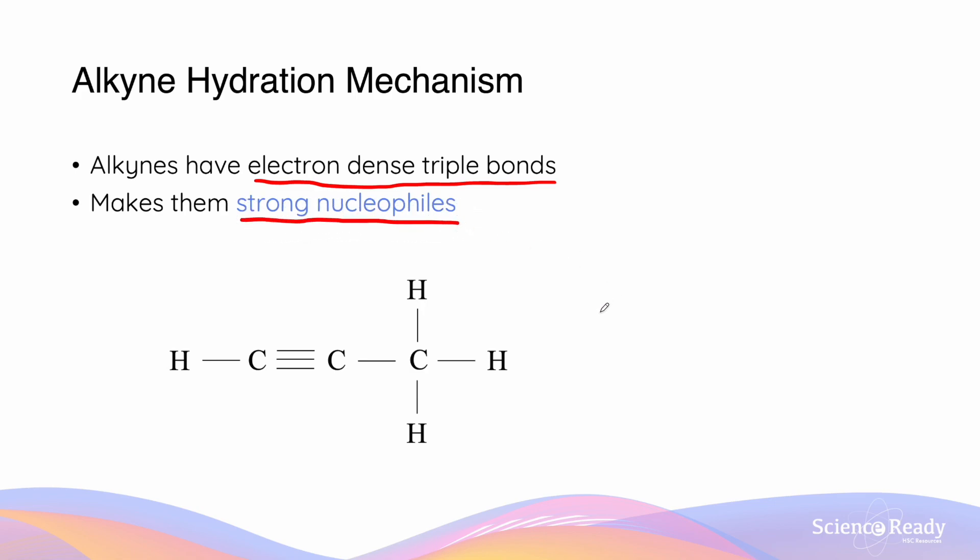This means that they seek out positive charge that exists in nuclei. And here we can see the characteristic C-C triple bond which exists in this alkyne, propyne.